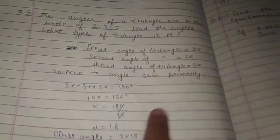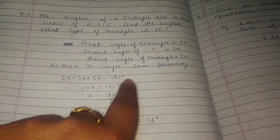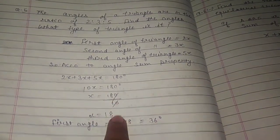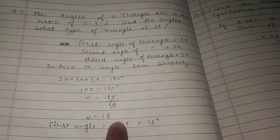According to angle sum property, 2x plus 3x plus 5x equals 180, and 10x equals 180, and x equals 180 by 10. So, x equals 18 degrees.